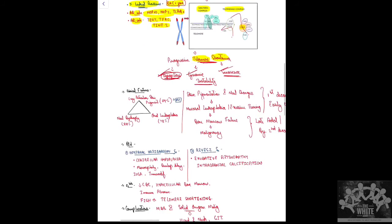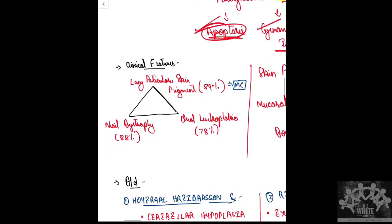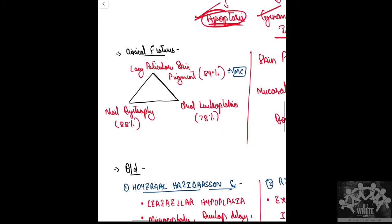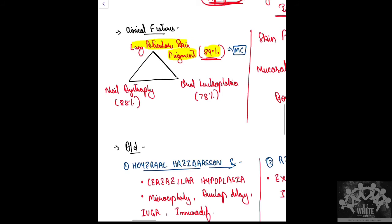The clinical features form a triad. The most common clinical feature is lacy reticular skin pigmentation — important for MCQs. This is followed by nail dystrophy, present in about 88% of patients, and oral leukoplakia in about 78% of patients.